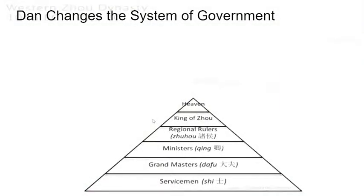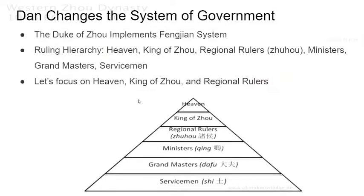Let's talk about the Feng Jian system. The Duke of Zhou implements this. Here is the ruling hierarchy: on top is Heaven, then the King of Zhou, then the regional rulers known as the Zhuhou, then ministers, grandmasters, and servicemen. We are going to focus primarily on Heaven, the King of Zhou, and the regional rulers.